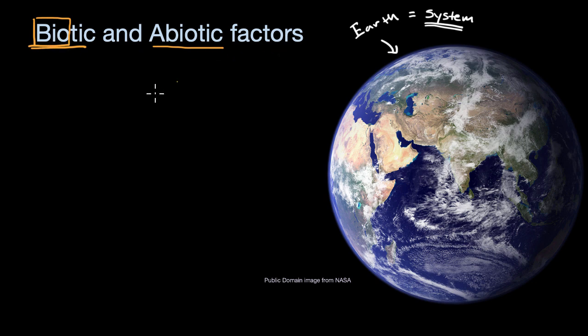Well, a biotic factor is a living factor. Now, what's a living factor in a system? For example, our bodies are a system. Our bodies are alive.